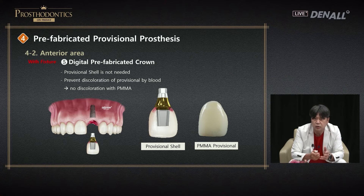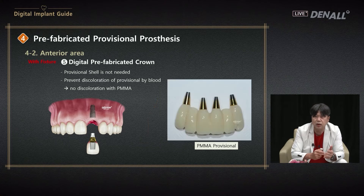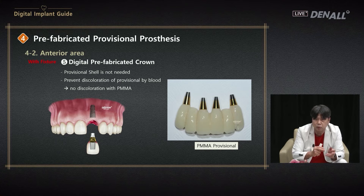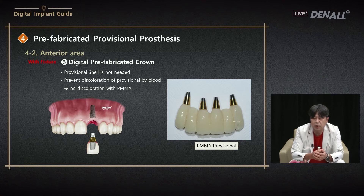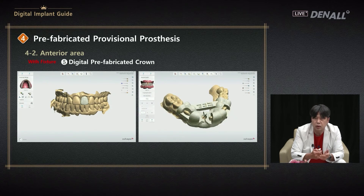After placing an implant immediately after extraction, a transfer abutment or temporary abutment is connected and the temporary is made from a shell — trimmed right after surgery, with resin filling the shell beside the patient. It took time and was not clean. Blood or bodily fluid can stain the shell. But if you place an implant using a guide, we know the position in advance, so PMMA can be milled in advance. The milled PMMA is completely cured — very clean and can function for a long time.